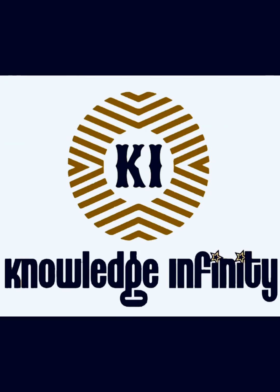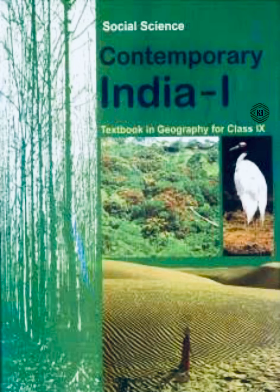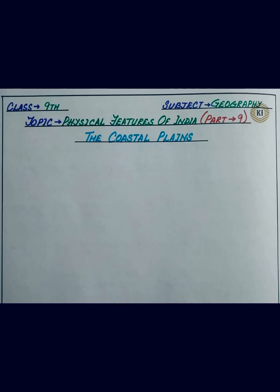Good morning Class 9. Welcome to your geography class. This is Part 9 of the chapter Physical Features of India, yani Bharat ke Bhotik Swarup. Today we have studied a lot about the Himalayan Mountains, then the Northern Plains, then the Peninsular Plateau, and then the Indian Desert, the Ithar Desert. Today we will study the Coastal Plains.